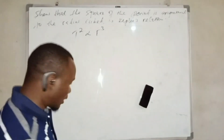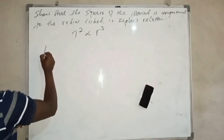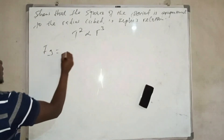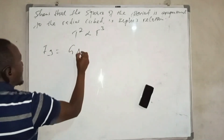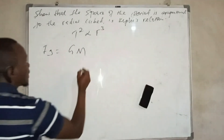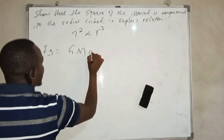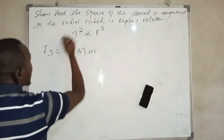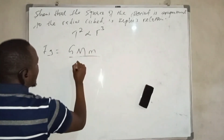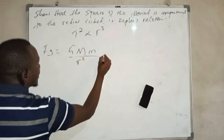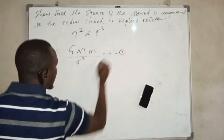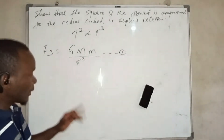We know that Fg, which is the force of gravity, is given by the gravitational constant times the mass of the planet or satellite, over the radius squared. Let us call this equation number one.